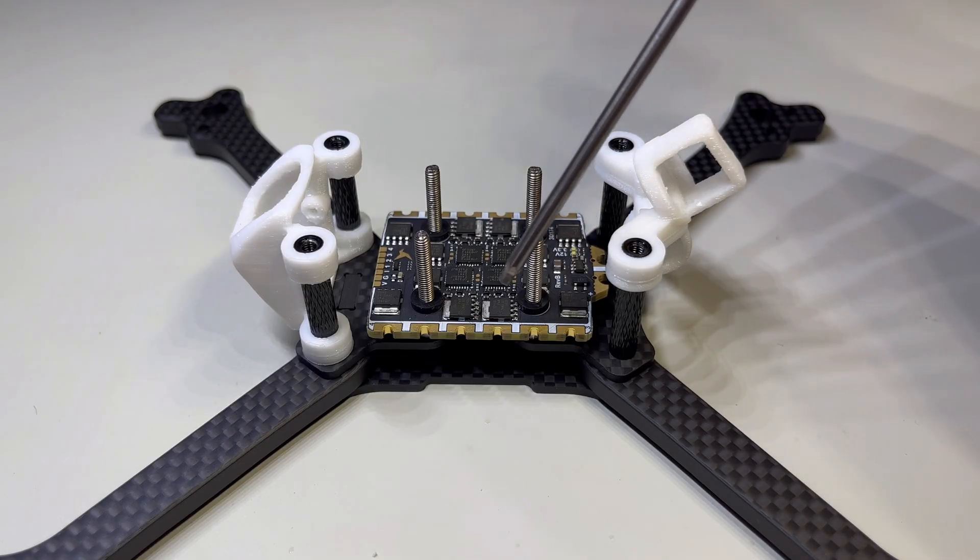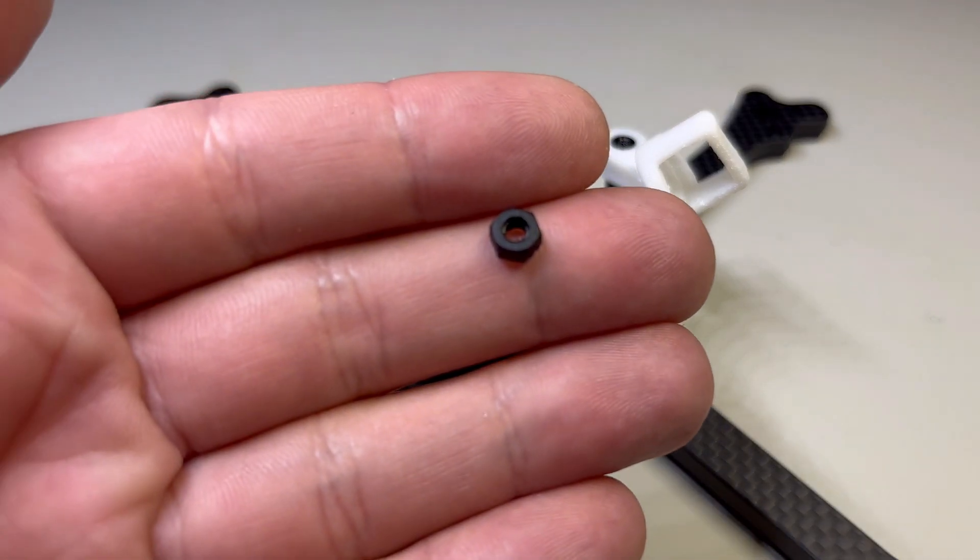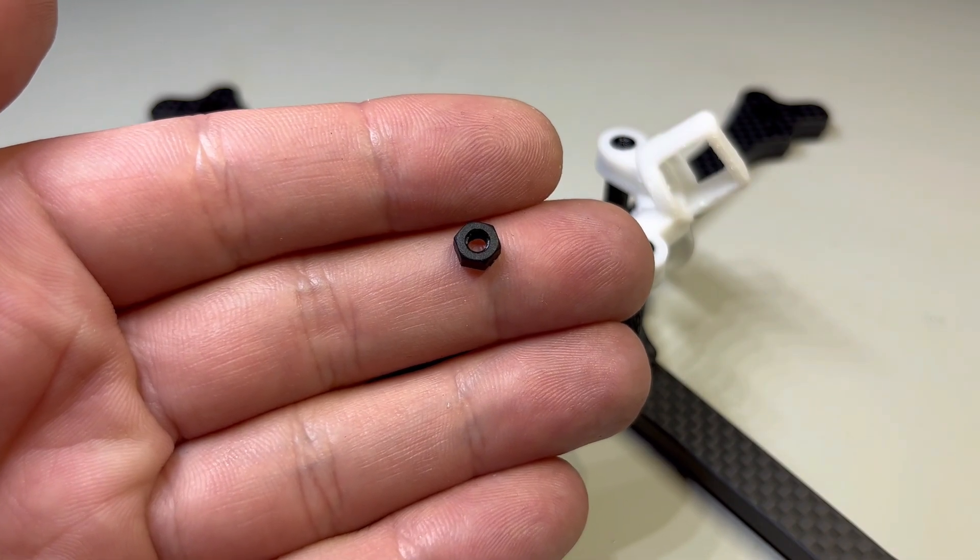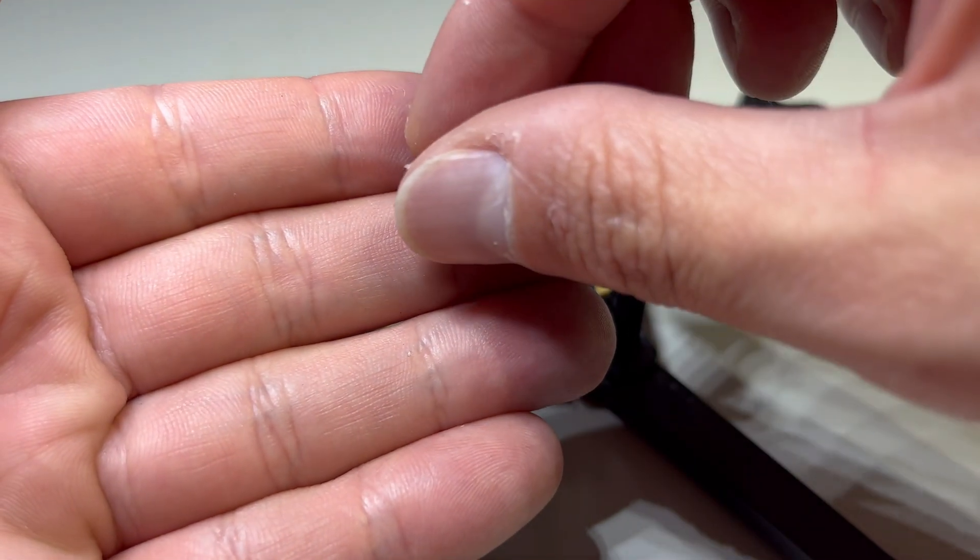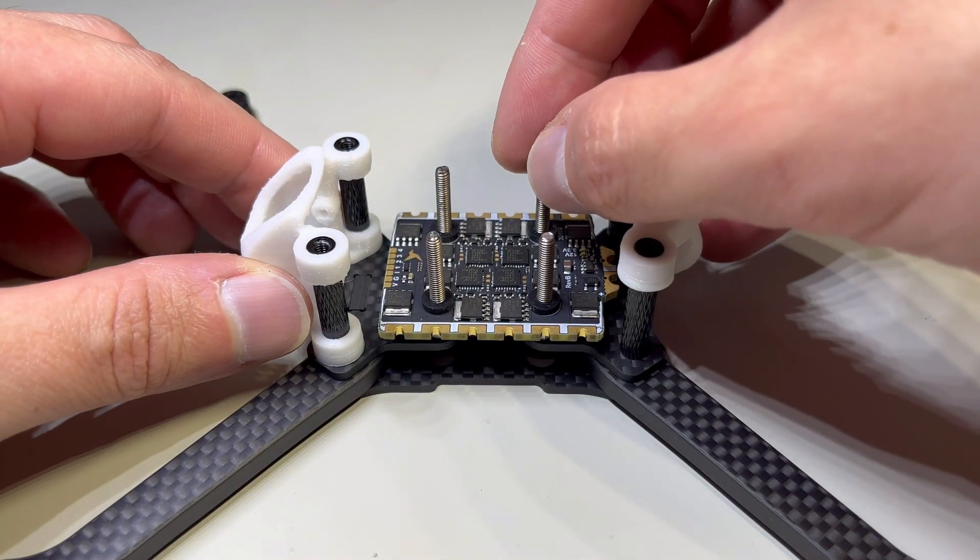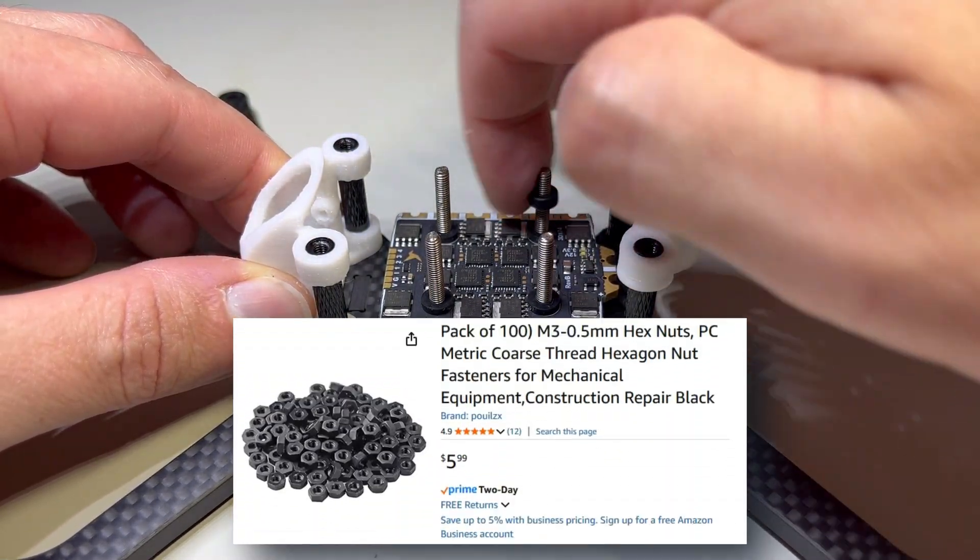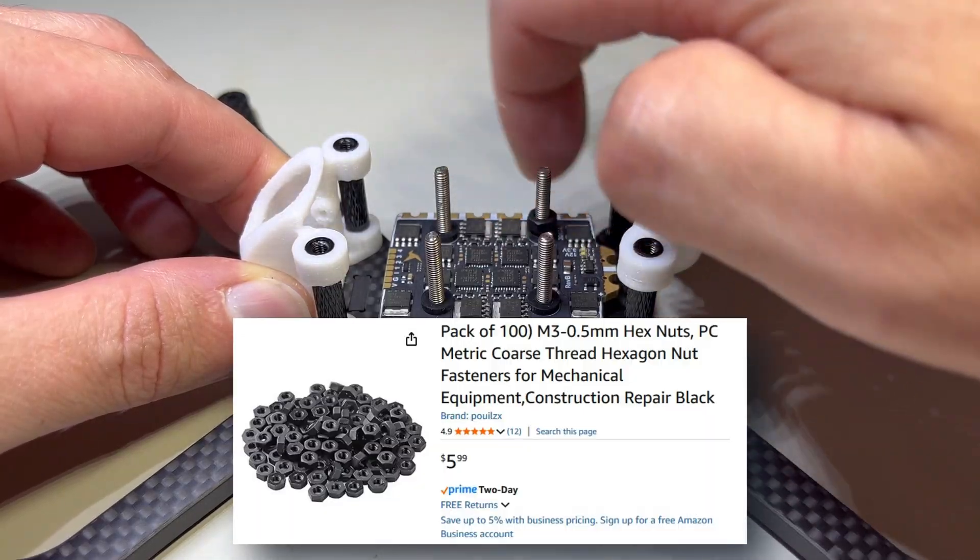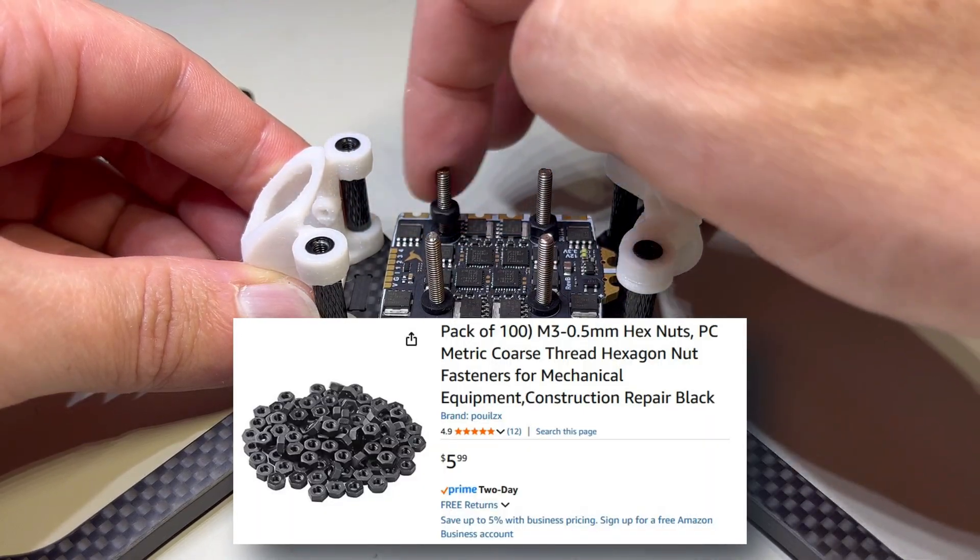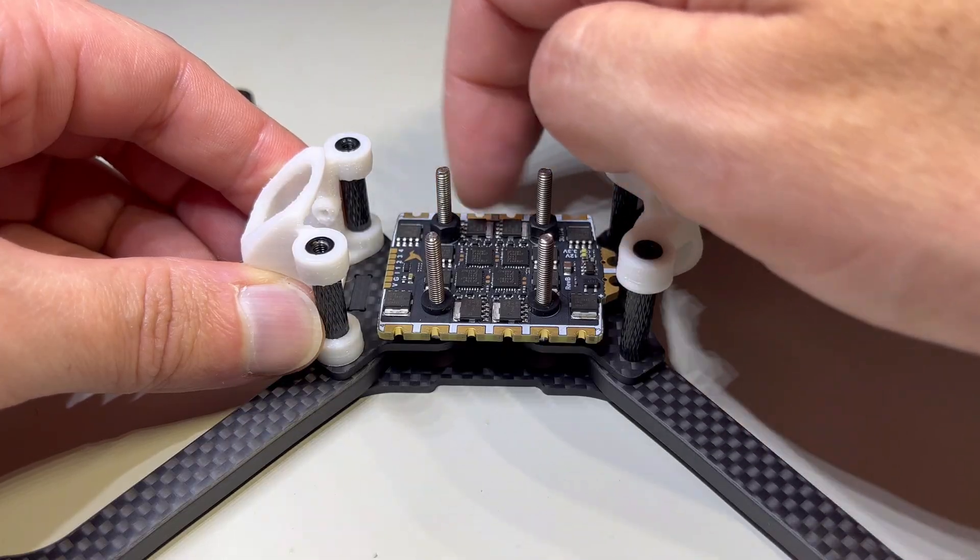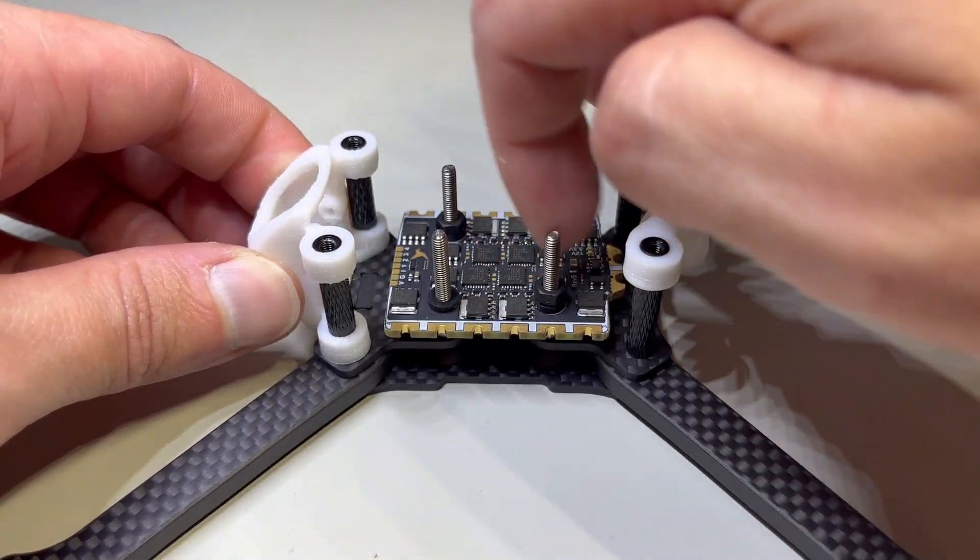Next we'll put our nylon stack nuts on, and these are going to serve as a layer between each component. So these are about two to two and a half millimeters tall, and they're going to provide us just enough room between each component. First, we'll put them all on hand tight, and then we will go in with a wrench and tighten them down.